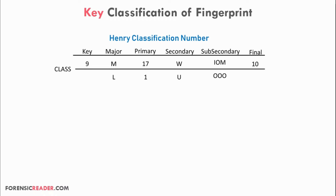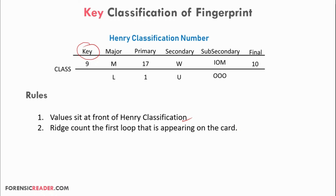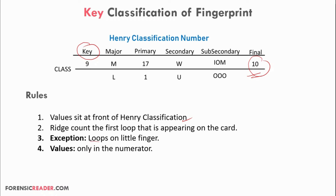The key classification value always comes first in the Henry classification number. Rules: ridge count of the first loop that appears on the card represents the key value, excluding loops on the little fingers since they are already used in final classification. The key value is always placed in the numerator regardless of which hand it appears on.